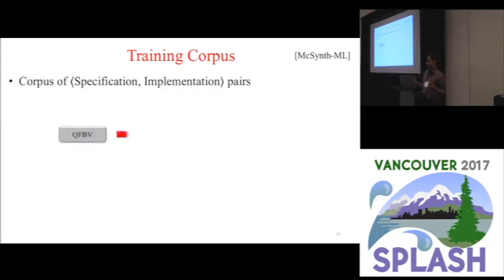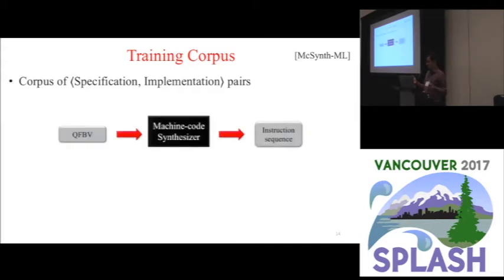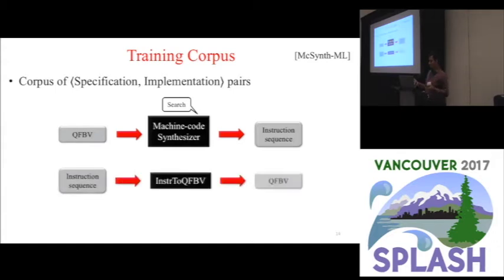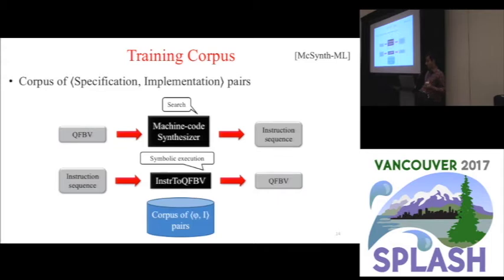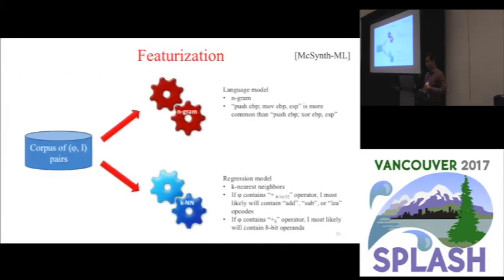Well, while synthesis from a formula to an instruction sequence is difficult, it turns out that we can map from an instruction sequence to a QFBV formula straightforwardly and quickly through symbolic execution. For example, creating a corpus of 4.4 million of these specification implementation pairs took only about 12 hours by this method. Our regression model was featurized on the instruction side and on the formula side.